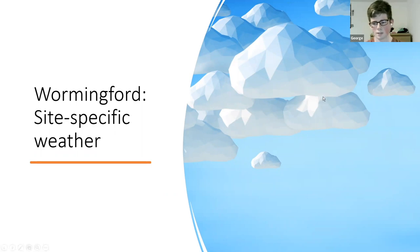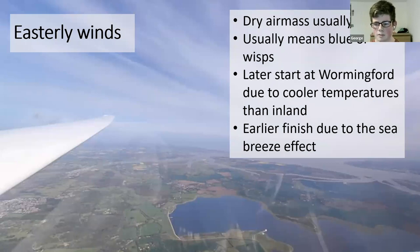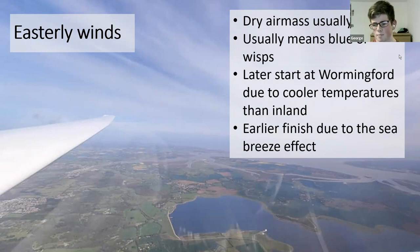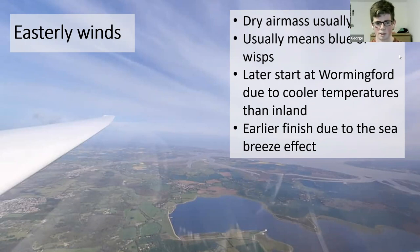One of the things we struggle with that a lot of clubs take for granted is easterly winds, which are a big problem for us. It usually originates from a dry air mass, which means we get quite blue conditions or at the least wisps. For Wormingford this means a late start because temperatures are really slow to heat up, and then an early finish as the sea breeze goes over the top of us. During task week we only had about a three- to four-hour window on the Saturday whereas everyone else in the UK had five or six hours, just because of the wind slowing everything down.